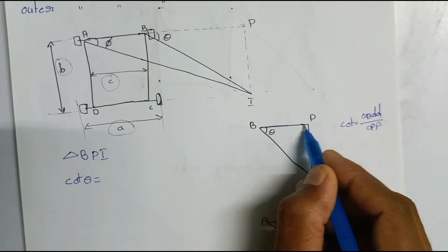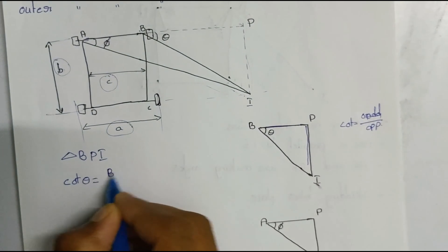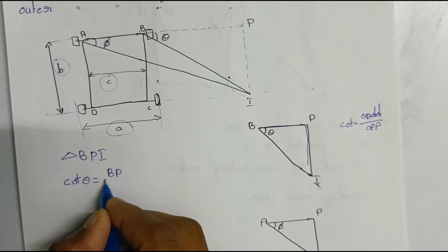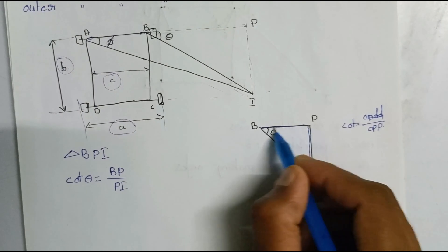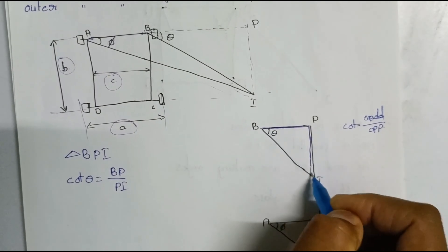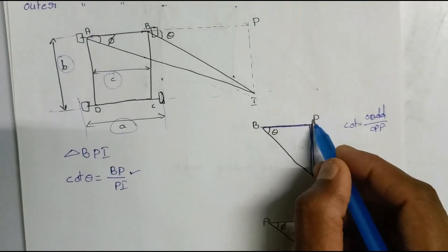The adjacent side is B P. And B P by P I. Adjacent side by opposite side. B P by I P.